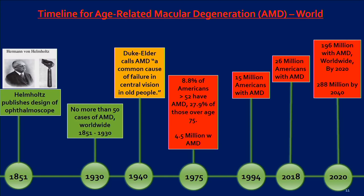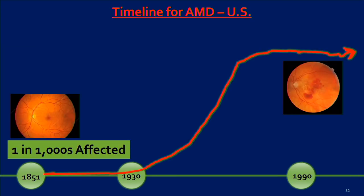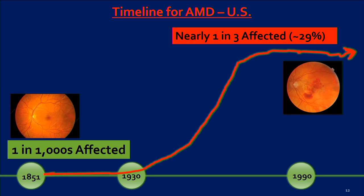Macular degeneration is my area of expertise. Herman von Helmholtz introduced the ophthalmoscope in 1851, allowing ophthalmologists to see the retina. In the next 80 years of potential discovery, there are no more than around 50 cases of macular degeneration in all the world's literature. By 1940, Duke Elder calls macular degeneration 'a common cause of failure in central vision in old people.' By 1975, 8.8% of Americans over age 52 — 4.5 million people — have AMD. By 1994, 15 million Americans. Today, around 26 million Americans, and 196 million people worldwide with macular degeneration, and climbing.